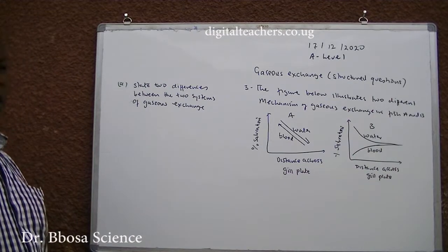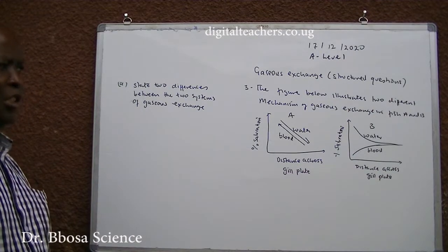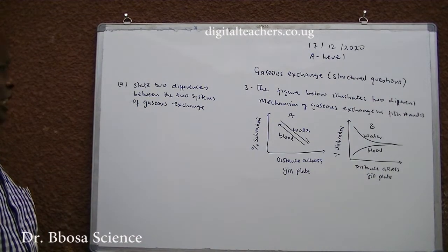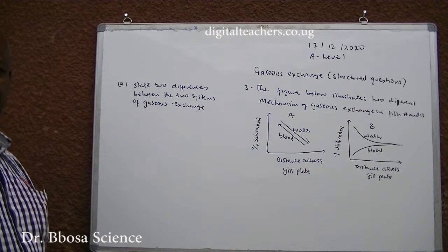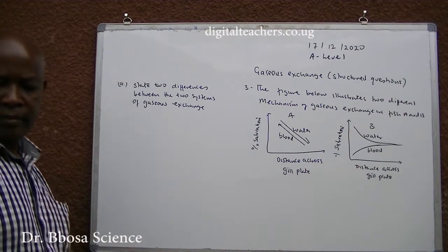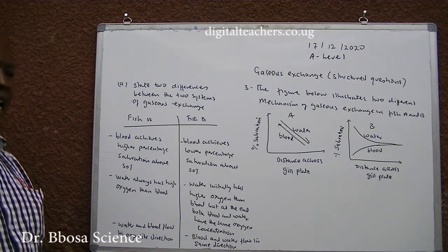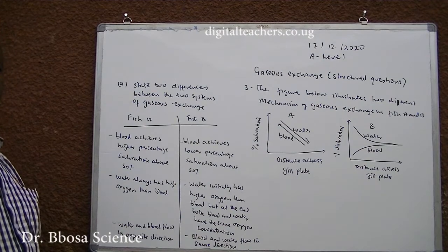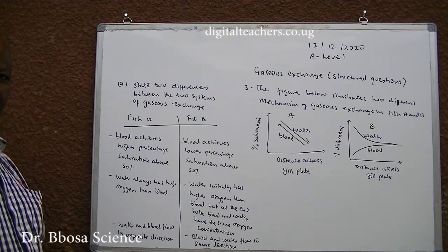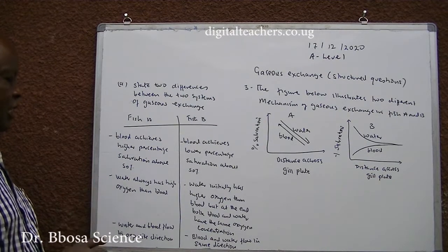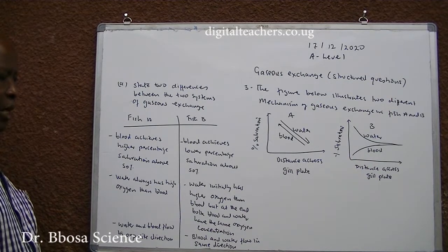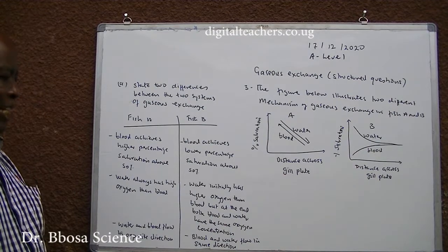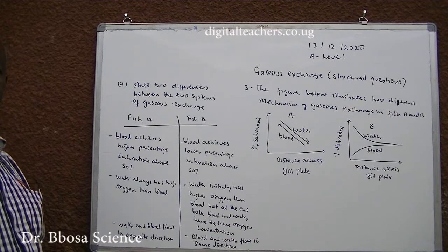Number 3: The figure below illustrates two different mechanisms of gaseous exchange in fish A and B. State two differences between the two systems of gaseous exchange. You can pause and answer. In fish A, blood achieves higher percentage saturation — above 50%. In fish B, blood achieves lower percentage saturation — about 50%. In fish A, water always has higher oxygen than blood. In fish B, water initially has higher oxygen than blood, but at the end both blood and water have the same oxygen concentration.